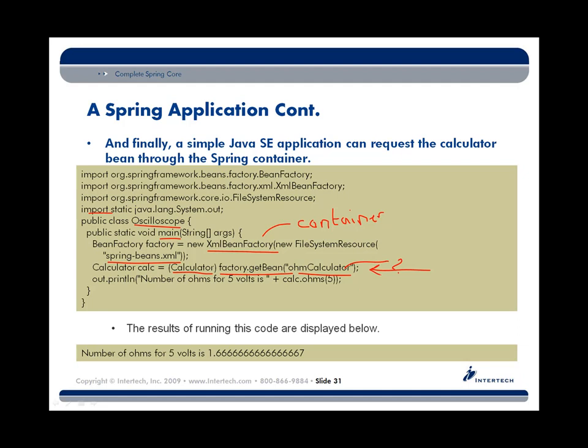Once I've got my CalculatorImpl, how do I use it? I simply call on its methods — in this case, asking to convert to ohms a value of 5 volts. So we're seeing 5 volts converted to ohms. And that's Spring beans being used in the Spring container.